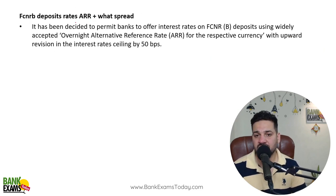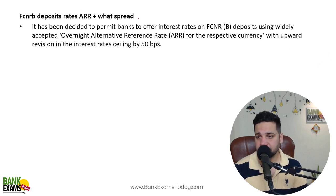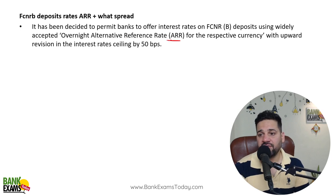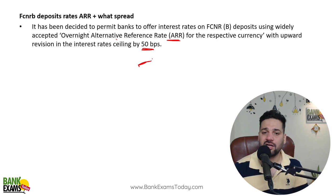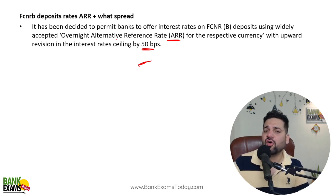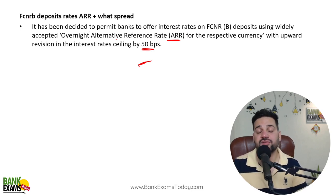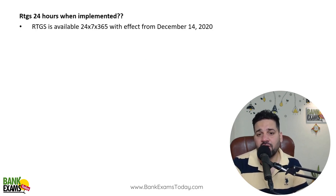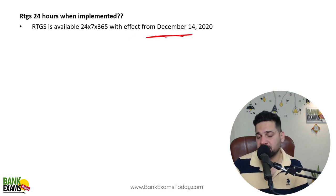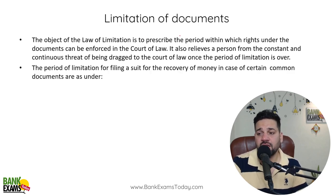FCNR deposits: the rate is up to 50 basis points above the overnight Alternative Reference Rate (ARR). FCNR is basically a fixed deposit in foreign currency for NRI customers. RTGS 24/7 availability started from 14th December 2020 — this is an RBI Circular. There was also a question on limitation of documentation, which I already taught — this table repeats in every exam.